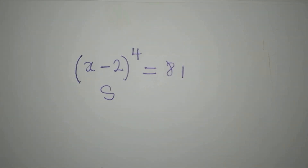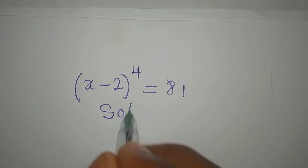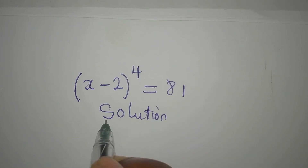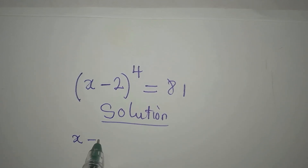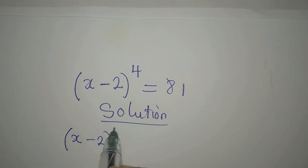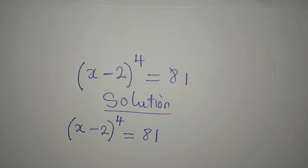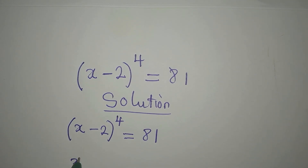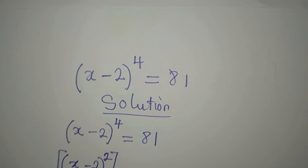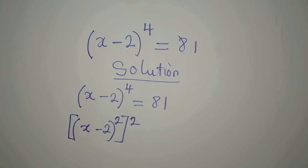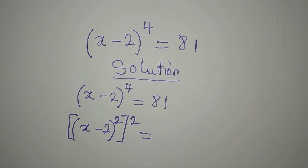Hello everyone, let's provide a solution to this problem. We have (x minus 2) to the power of 4 equals 81. What do I do first? I want to apply difference of two squares, so I will break this into two: (x minus 2) to the power of 2, everything to the power of 2, and on the other side 81, which is the same as 9 to the power of 2.